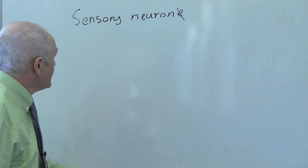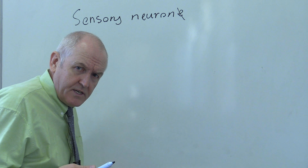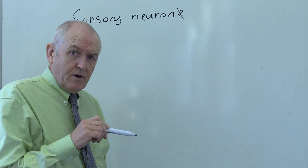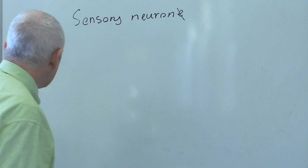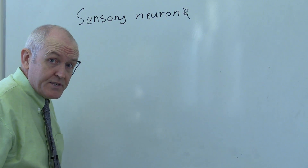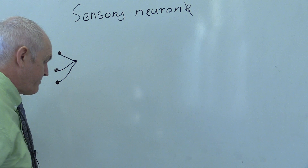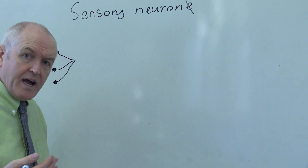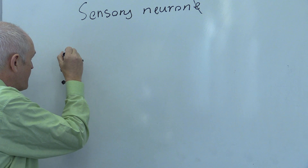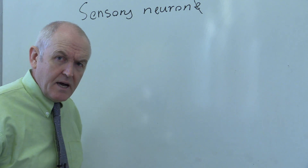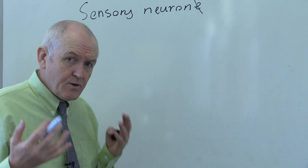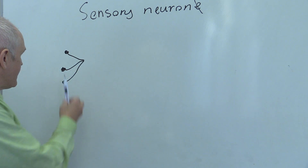We've looked at the motor neuron already in the first video in this series, and the components of the sensory neuron in many ways are very similar. But the sensory neuron begins in the periphery, where we have some peripheral sensory receptors. For example, these could be in the skin, where we have touch receptors, pressure receptors, and also free nerve endings with no apparent receptors on the end that detect things like pain, heat, and cold.